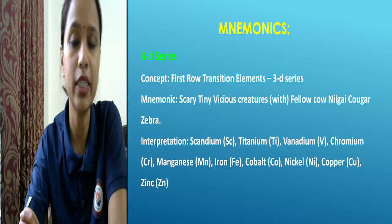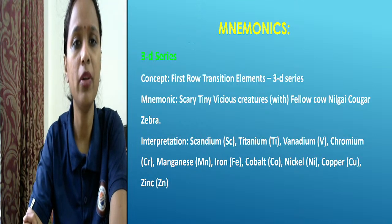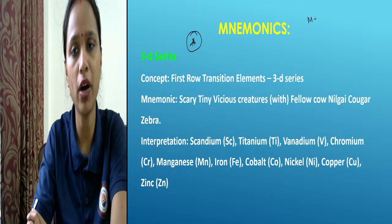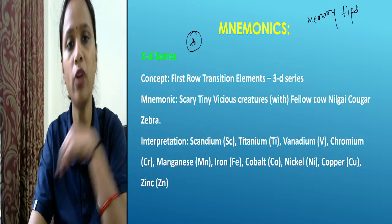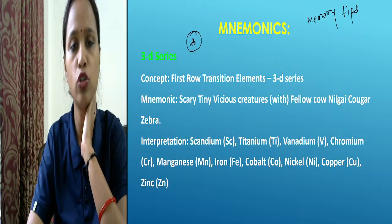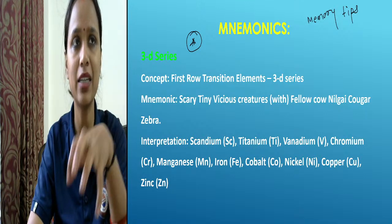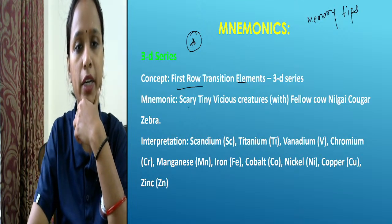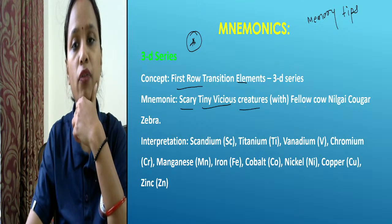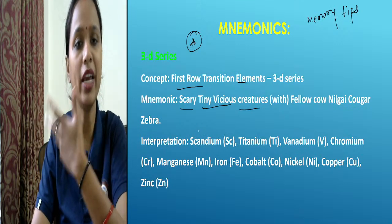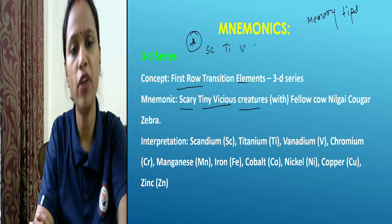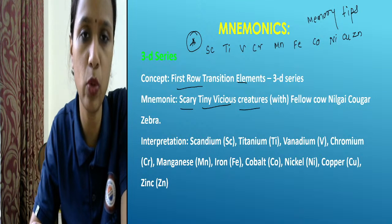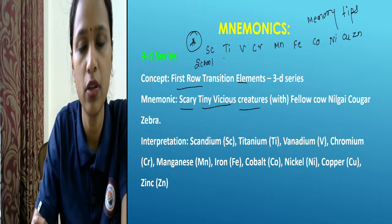Next, mnemonics: for the periodic table, memory tips are already uploaded on our website. For D and F block I have given totally different memory tips. For the first row transition elements: Scandium, Titanium, Vanadium, Chromium, Manganese, Iron, Cobalt, Nickel, Copper, Zinc — the mnemonic is 'Scary Tiny Vicious Creature Fellow Cow Nil Nil Gai Cowgit' or 'School Teacher Very Cruel Man.'